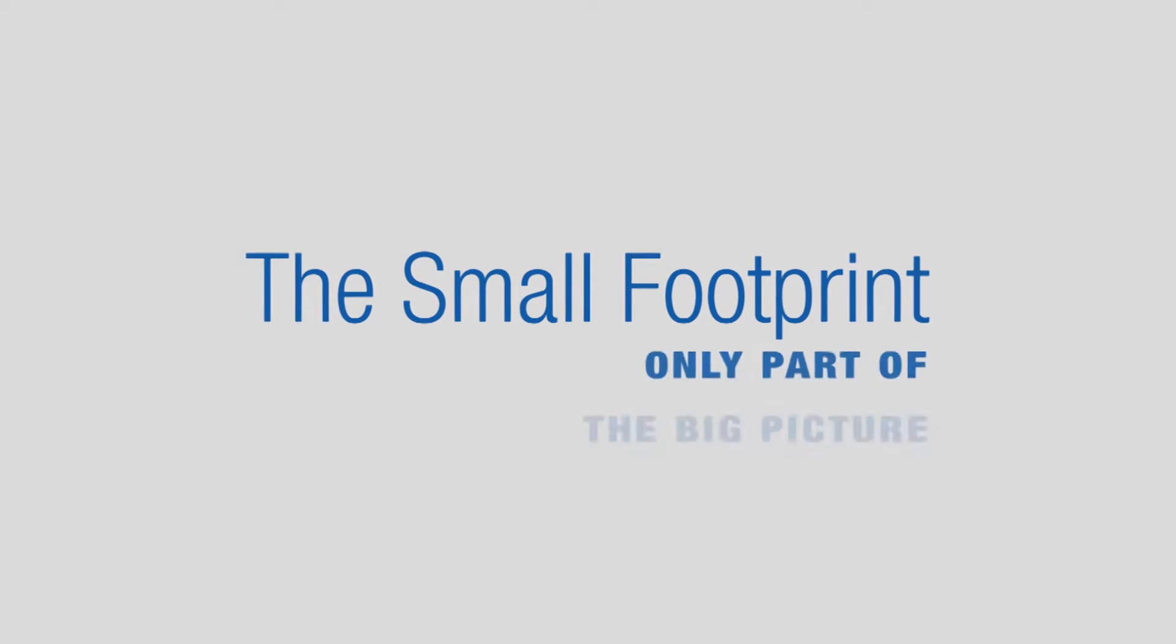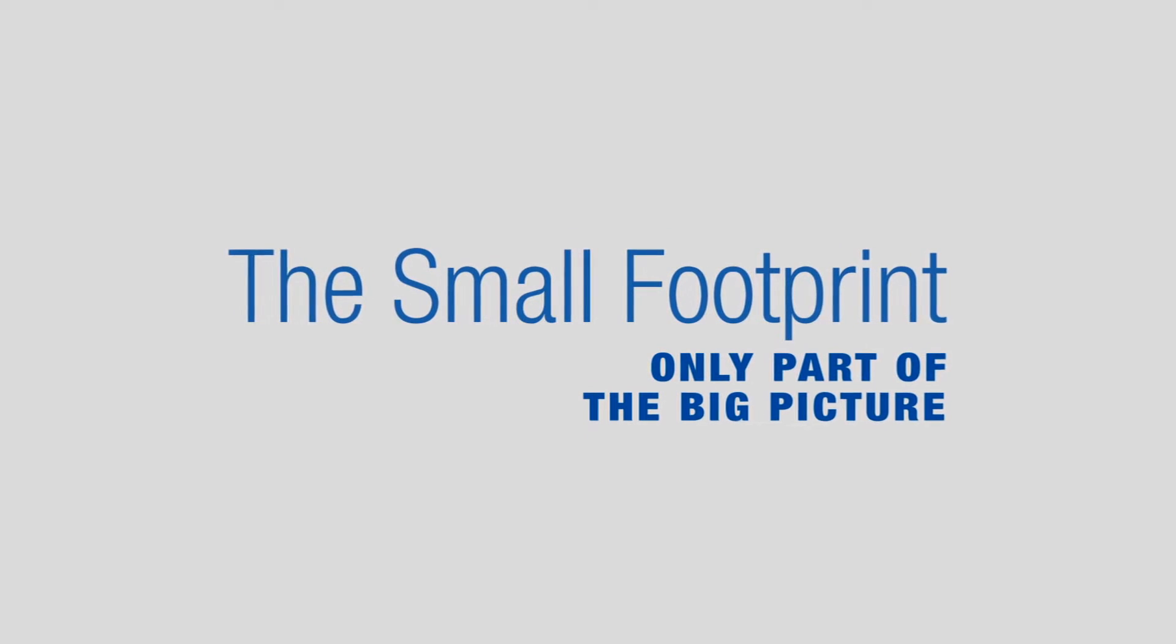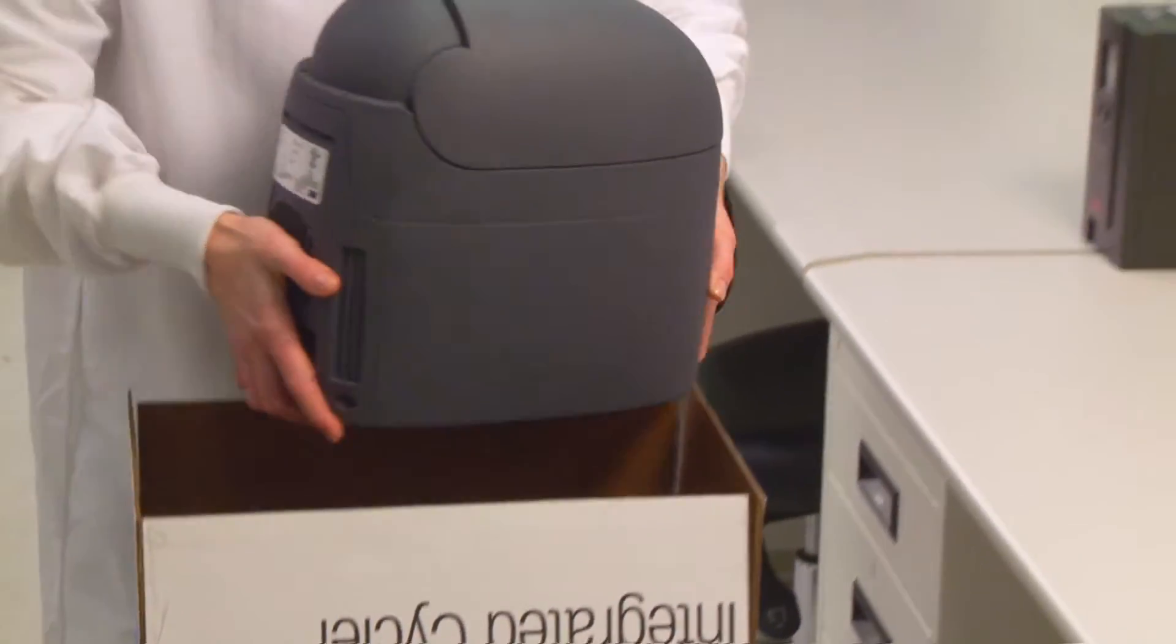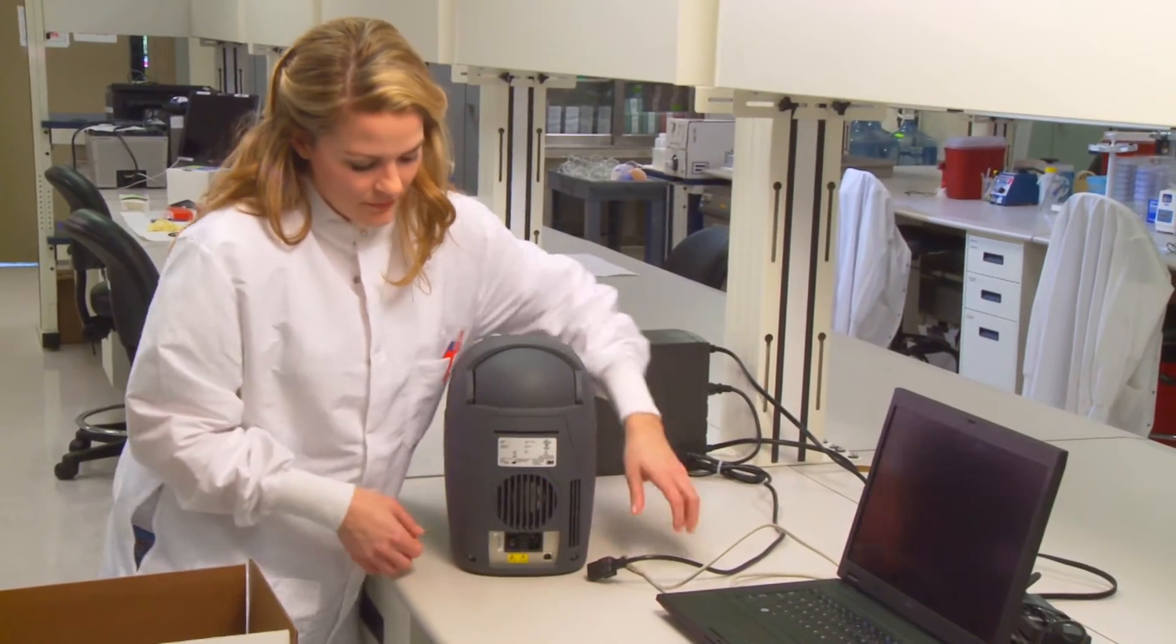With an extremely small footprint of just 12 by 8 inches, the Integrated Cycler requires minimal space in the lab. With a weight of just 17 pounds, it's easy to pick up and relocate whenever the need arises.